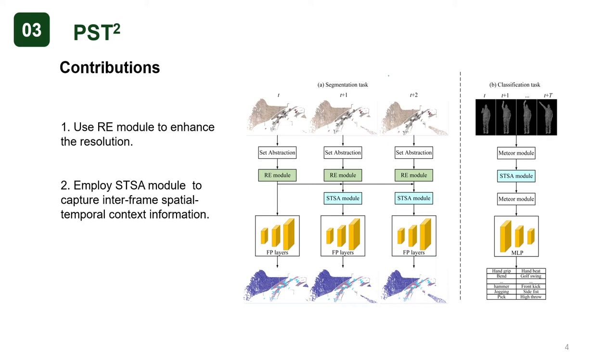For 4D semantic segmentation, our PST² model adopts an encoder-decoder architecture. Specifically, the encoder consists of a backbone, an RE module, and an STSA module, and the decoder includes multiple feature propagation layers.